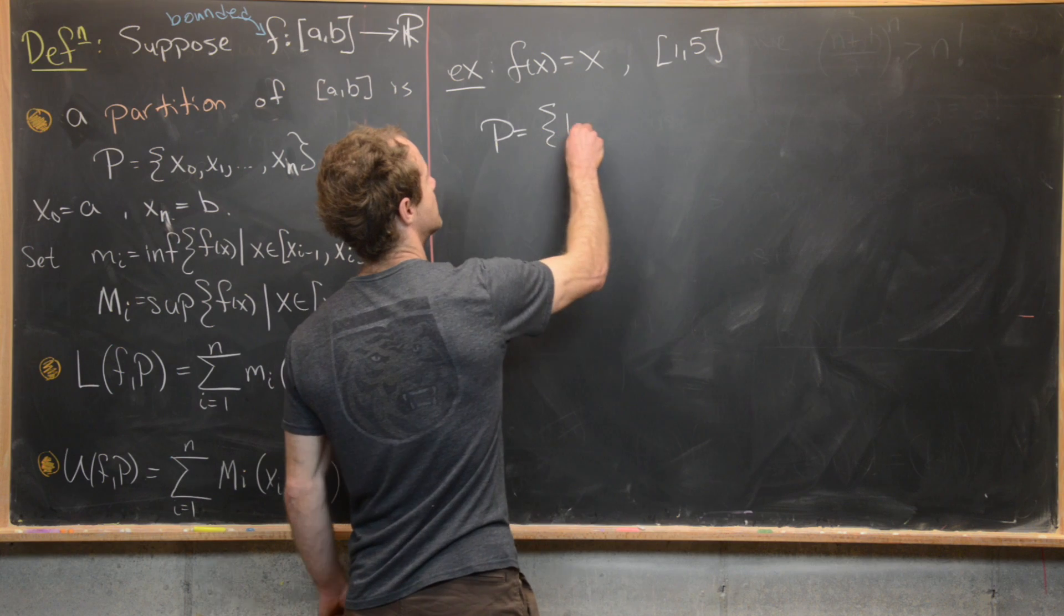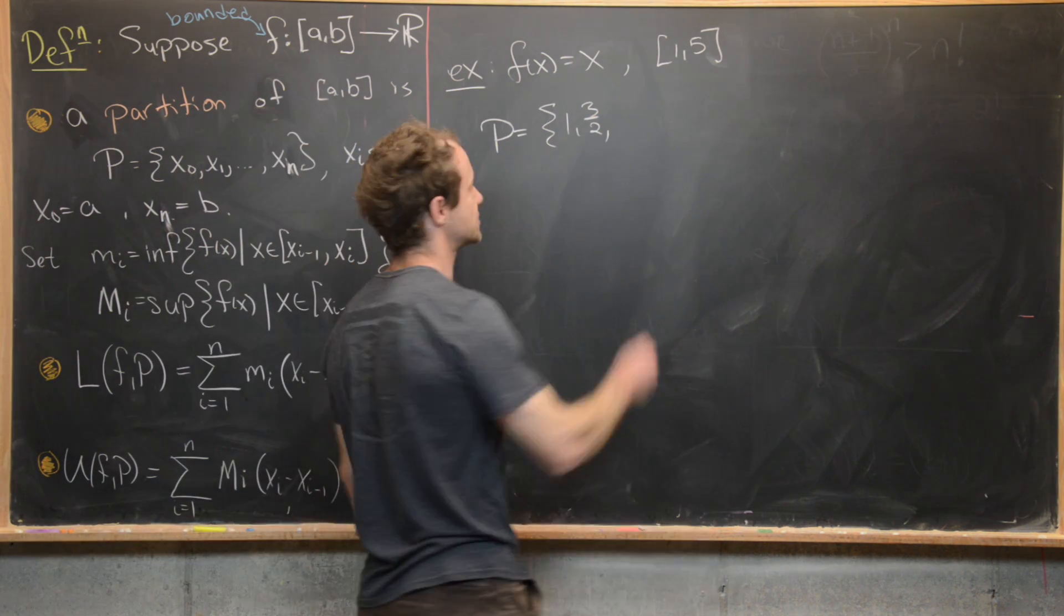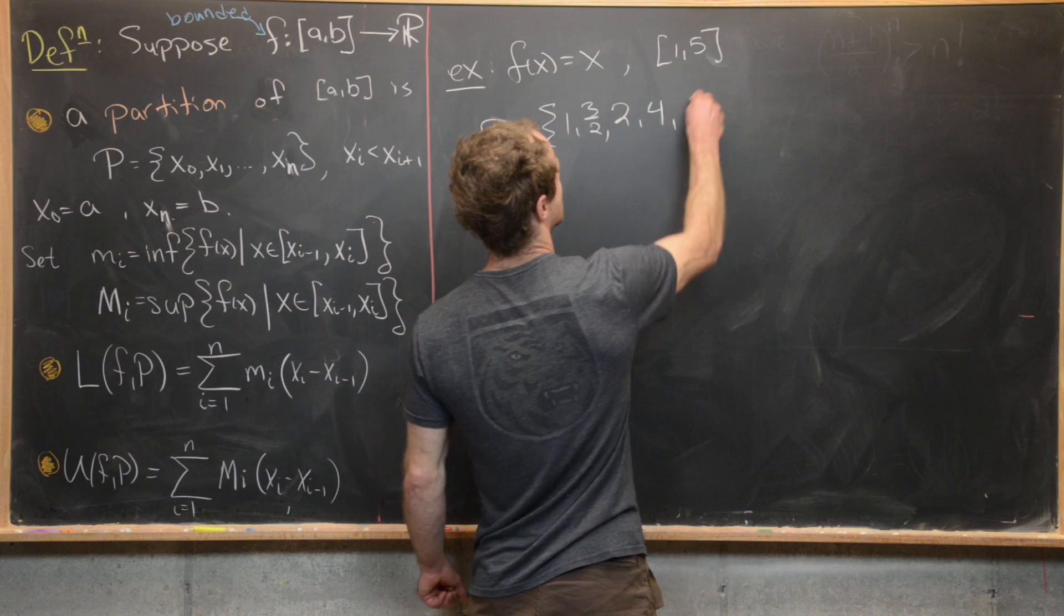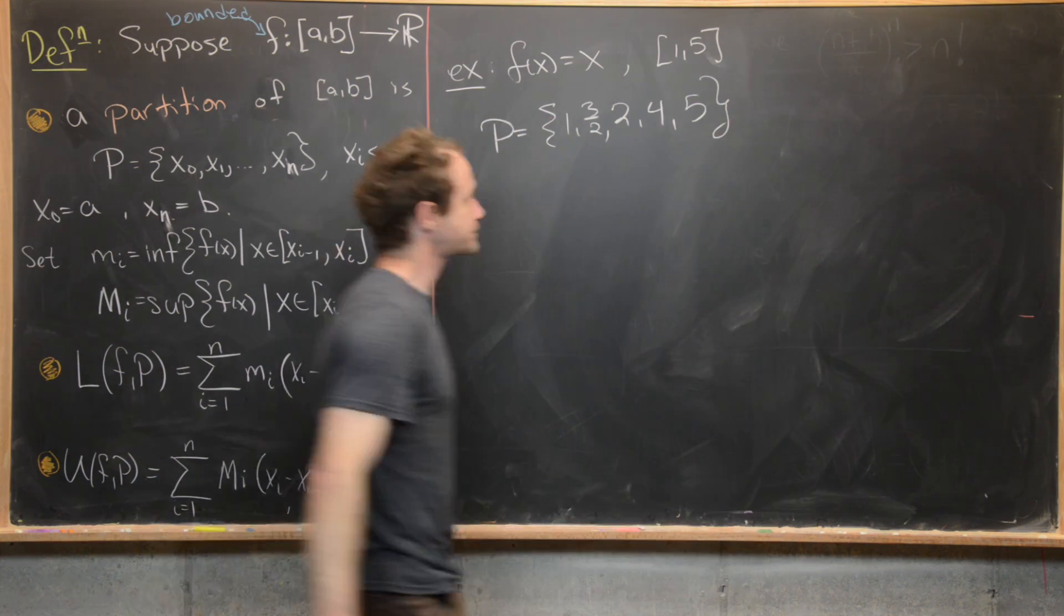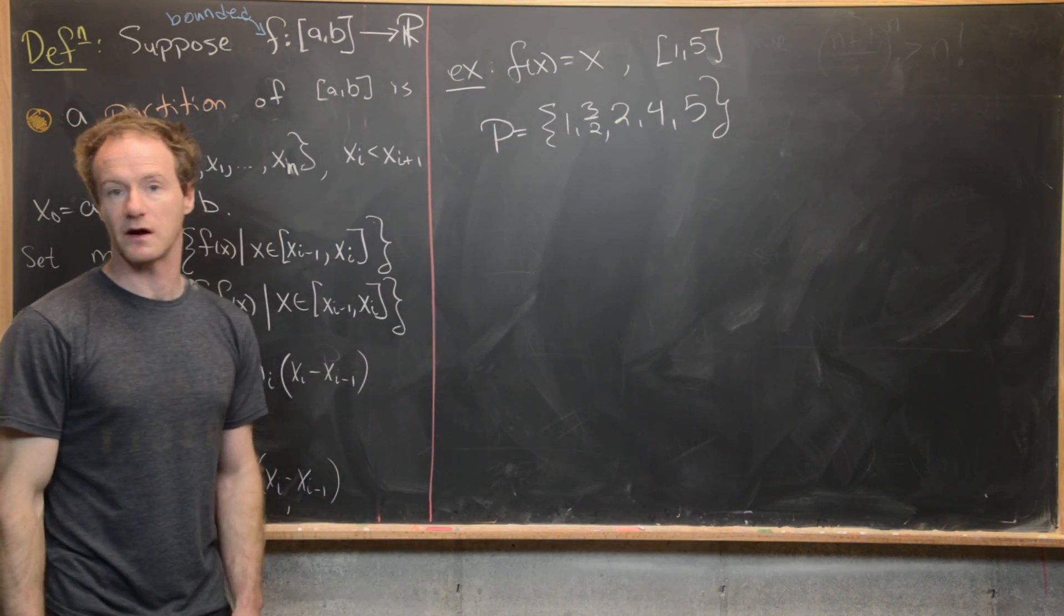So let's maybe go ahead and take this as our partition. So we'll take {1, 3/2, 2, 4, 5}.